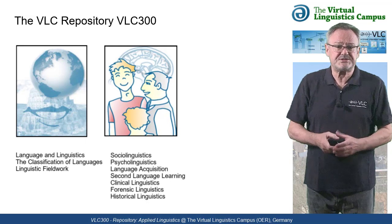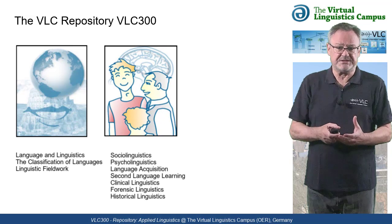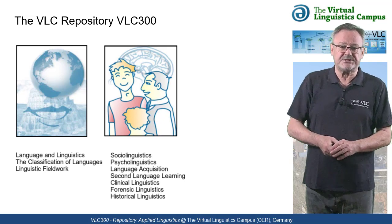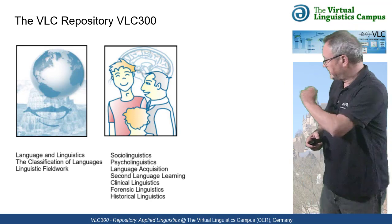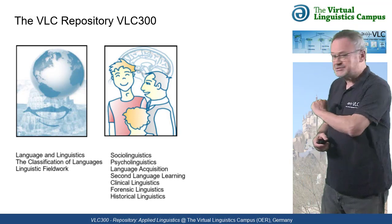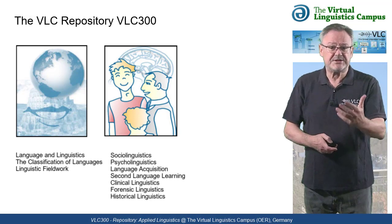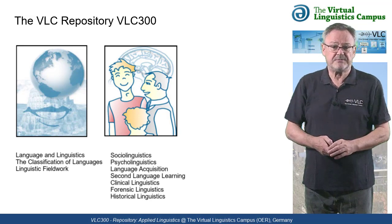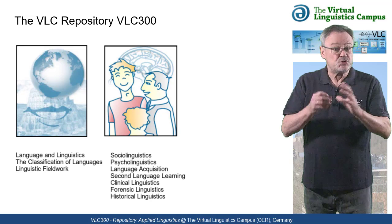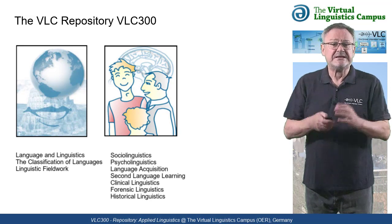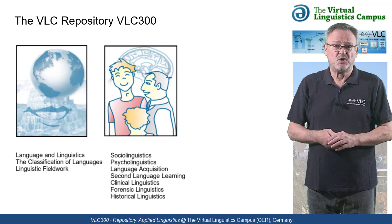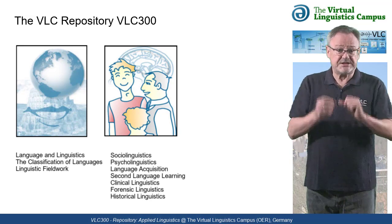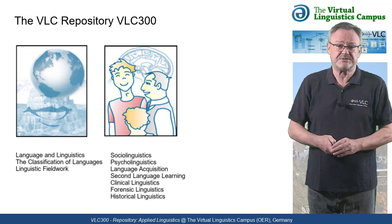Part 2 discusses the various disciplines that are listed under the heading of Applied Linguistics: Psycholinguistics, Language Acquisition and Language Learning, Sociolinguistics, Clinical Linguistics, and Forensic Linguistics, to name the main ones.